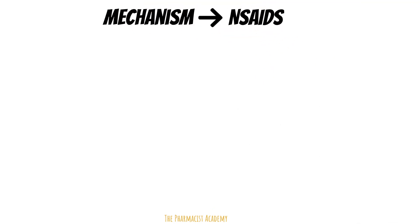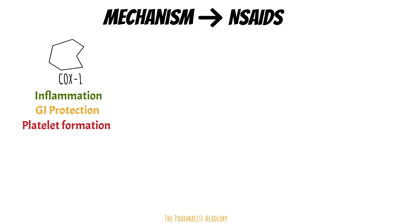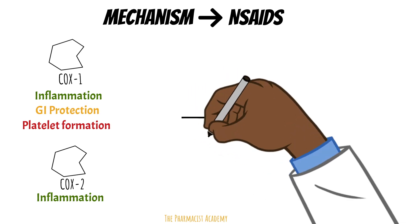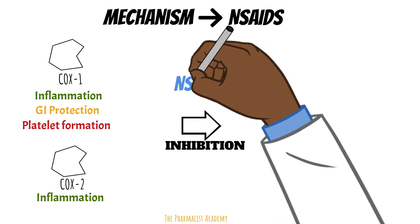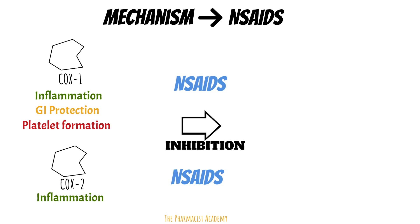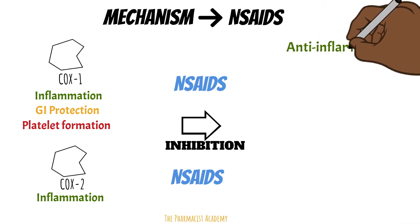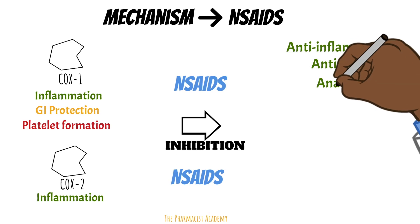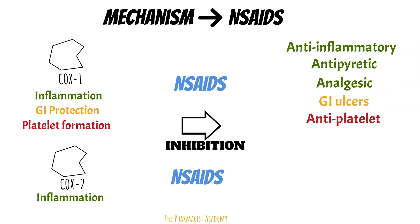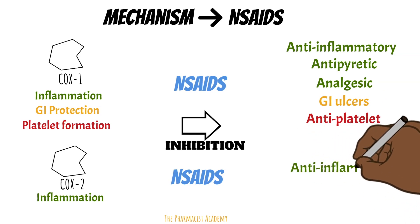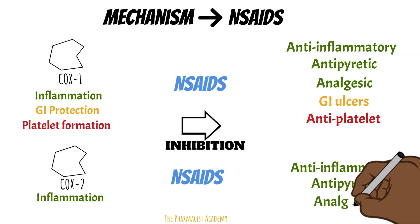As we just discussed, these are the effects when arachidonic acid goes through COX-1 and COX-2 enzymes. Traditional NSAIDs are non-selective, so they inhibit both COX-1 and COX-2. COX-1 inhibition leads to anti-inflammatory, antipyretic, and analgesic properties, but also GI ulcers and antiplatelet properties. COX-2 inhibition leads to anti-inflammatory, antipyretic, and analgesic properties.